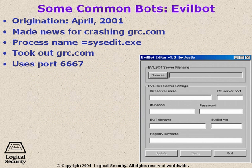Here's EvilBot. This was originated in 2001 and made its fame by crashing GRC.com. GRC.com is a security website, so it was ironic that it was its main target. The process name is sysedit.exe, which looks like a system file. It's very easy to detect now if you know what you're looking for, but sysedit in a process list looks fairly harmless. It does use port 6667, which is fairly common to a lot of bots that use IRC, so it can be easy to spot if you see that traffic.